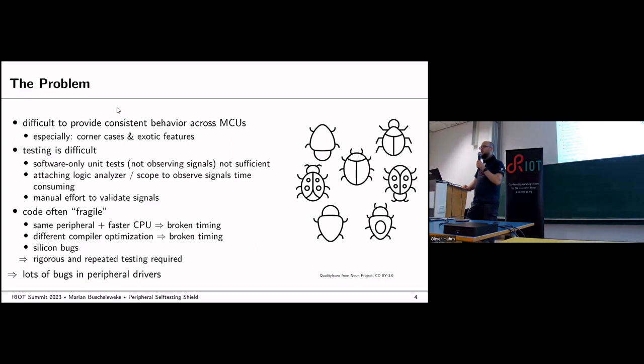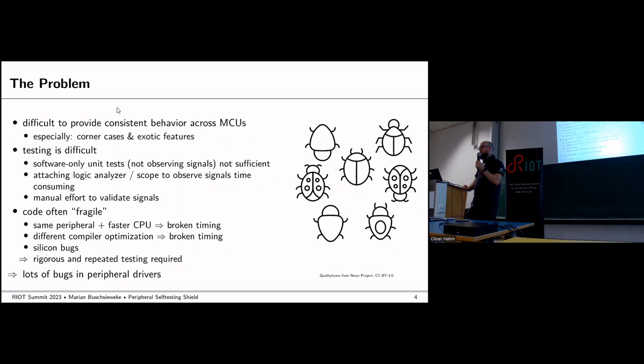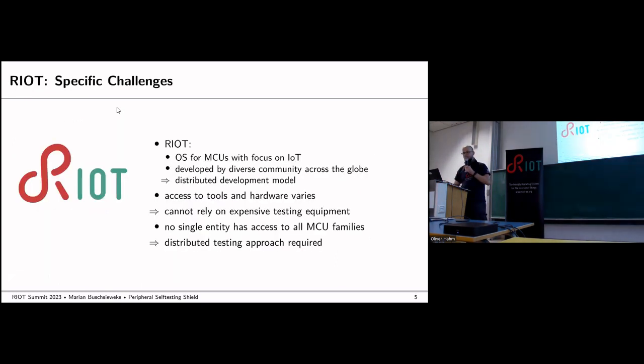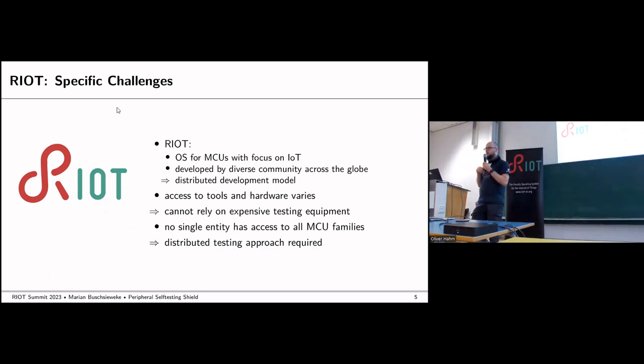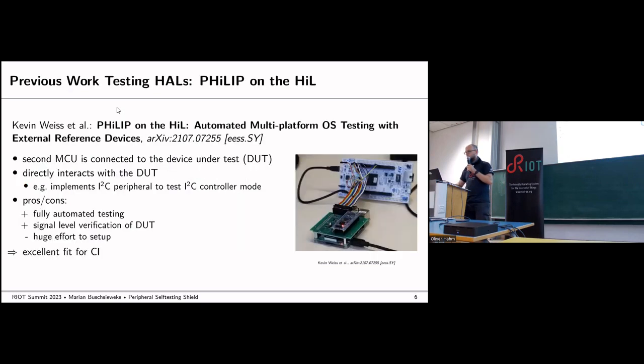Finally, the code is quite fragile. If we get a new family of a microcontroller with a faster CPU, it could be that all the timings that previously worked fine now no longer work because of the faster CPU. Or if we upgrade the tool chain and the optimizer generates faster code, the timings might no longer work. This is a unique challenge in the RIOT community since we need to distribute the testing equipment and no one has all the hardware we want to test.